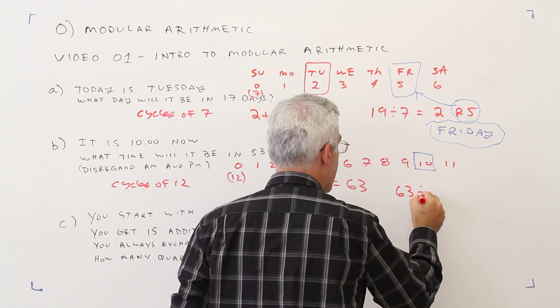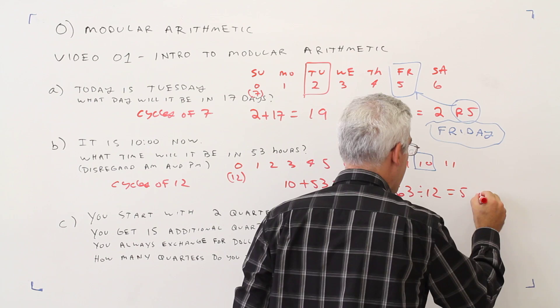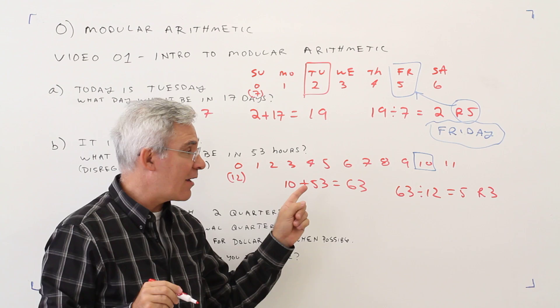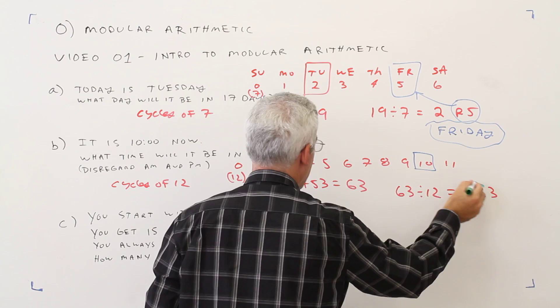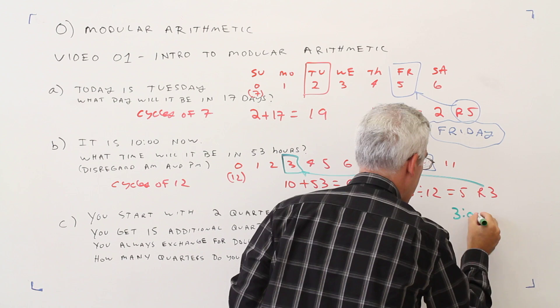So 63 divided by 12. 12 times 5 is 60. So that's 5 remainder 3. So what that means is we did 5 complete cycles in the clock. And then we're ending up at the number associated with remainder 3, which in this case was 3 o'clock. So this will be 3 o'clock.